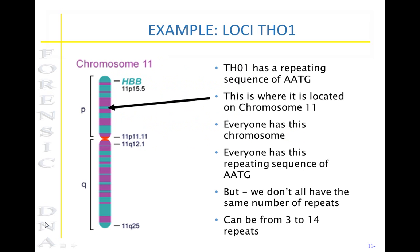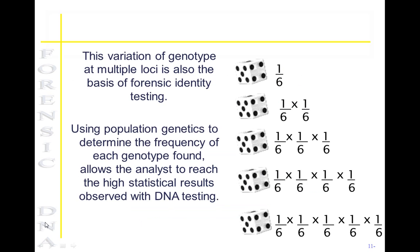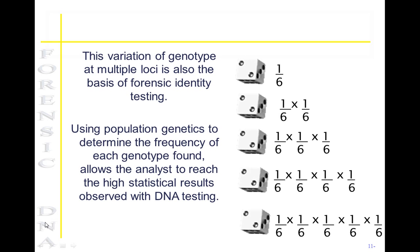An example of this is located at chromosome 11. The location, or loci, TH01 has a repeating sequence of adenine, adenine, thymine, and guanine. Everyone has chromosome 11 and everyone has this repeating sequence. However, individuals will have a different number of repeats of this sequence — the repeats can be anywhere from 3 to 14. So person 1 may have 10 repeats at this location where person 2 may have 13. The variation of genotypes at multiple locations is the basis for DNA identity testing.